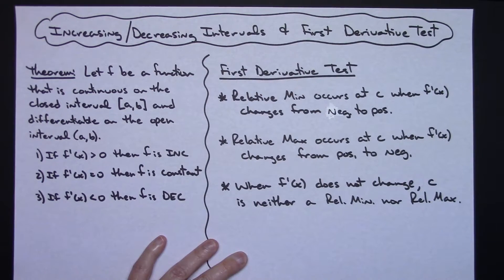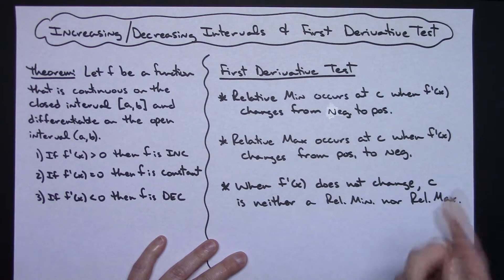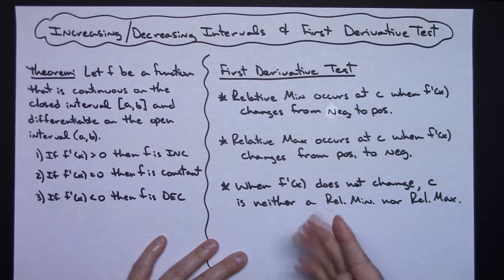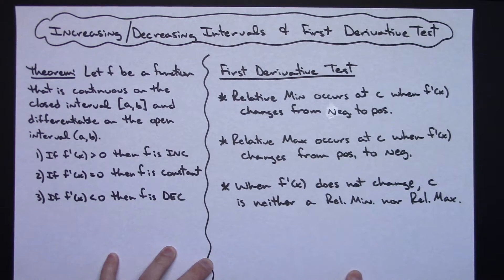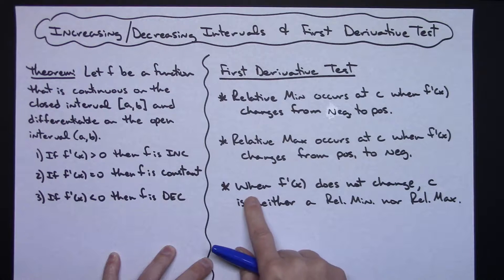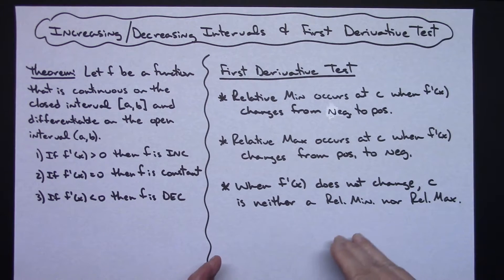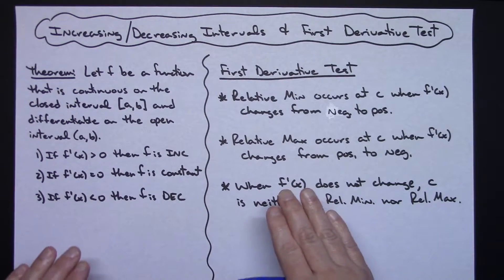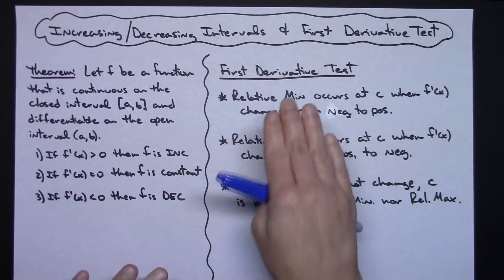We also have the first derivative test. A relative minimum occurs at C when the derivative changes from negative to positive — that makes sense because the original function will be at a minimum. A relative maximum occurs at C when the derivative changes from positive to negative. When the derivative does not change sign at C — staying negative to negative, or positive to positive — then you don't have a relative minimum or maximum. That's background information you're going to want to memorize.